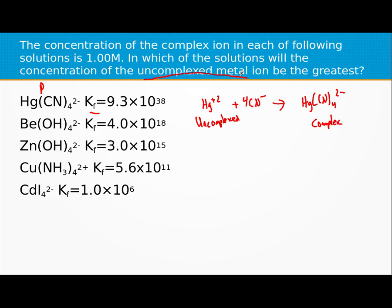So which one's going to have the most reactants? And then we just look at the K and we realize that that being the smallest K would have the most reactants. Therefore, the most uncomplexed metal ion is just the cadmium.